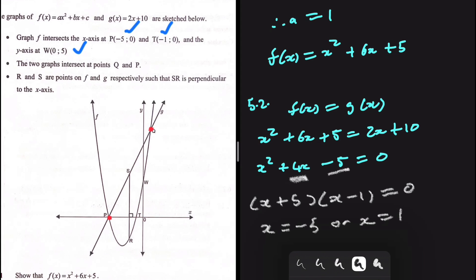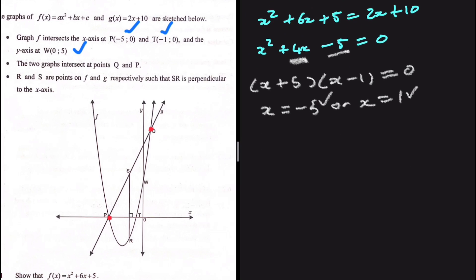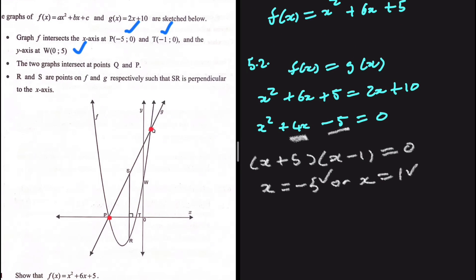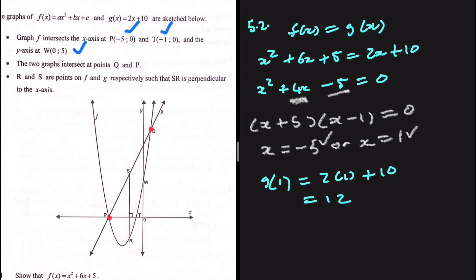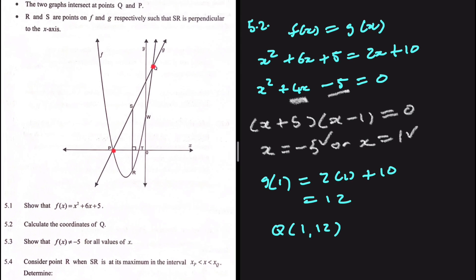So x equals minus 5 or x equals 1. We know x equals minus 5 is the x-coordinate of p, so x equals 1 must be the x-coordinate of q. Substituting into g of x: g of 1 equals 2 multiplied by 1 plus 10, which equals 12. So the coordinates of q are (1, 12).